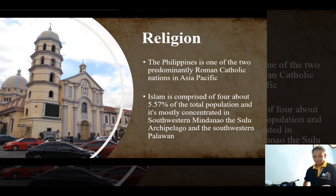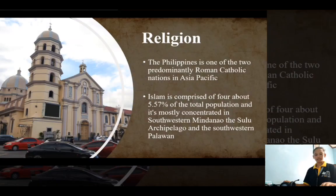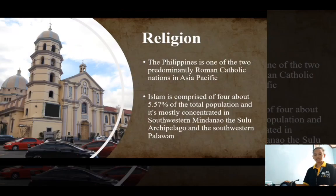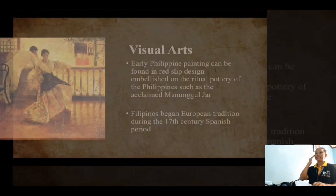Those reporting other religions comprise about 4.37% of the total population. Before the arrival of the Spaniards and the introduction of Roman Catholicism and Western culture in the 16th century, the indigenous Austronesian peoples practiced their own indigenous beliefs.